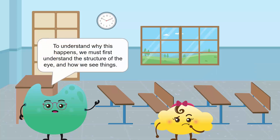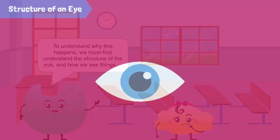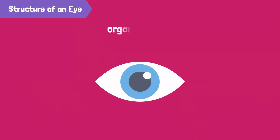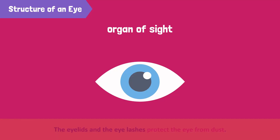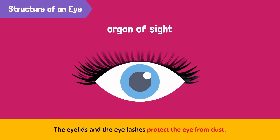To understand why this happens, we must first understand the structure of the eye and how we see things. The eye is an organ of sight. The eyelids and the eyelashes protect the eye from dust.